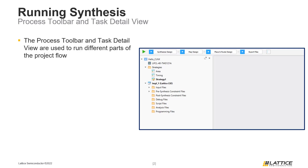The process toolbar consists of four buttons, each corresponding to a different part of the Radiant project flow. By default, the contents of Radiant's task detail view will be minimized whenever it is not selected.